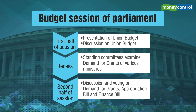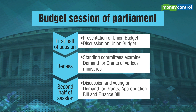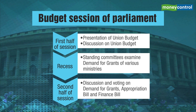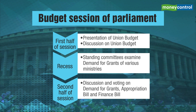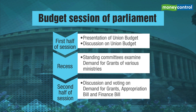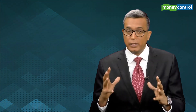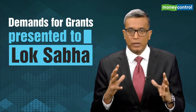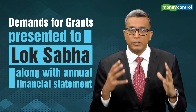Article 113 of the Constitution mandates that the estimates of expenditure from the Consolidated Fund of India included in the annual financial statement and required to be voted by the Lok Sabha be submitted in the form of demands for grants. The demands for grants are presented to the Lok Sabha along with the annual financial statement.